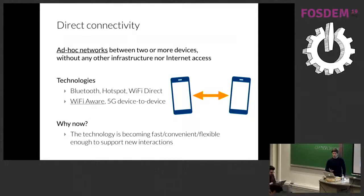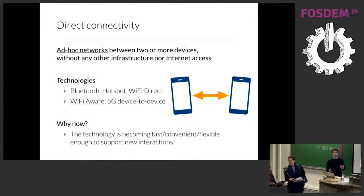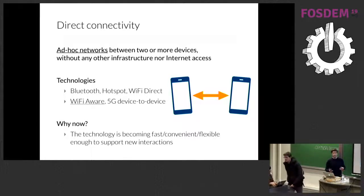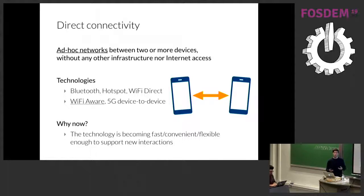Direct connectivity is the ability to create networks directly between two or more devices without needing any infrastructure or access to the internet. There are several ways to do this — some that you might already know about, and a couple of new ones. Wi-Fi Aware, which is what I am using for the examples here. And at some point in the future, there will also be 5G device-to-device.